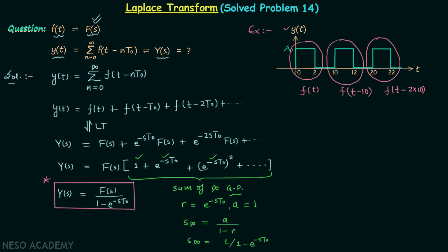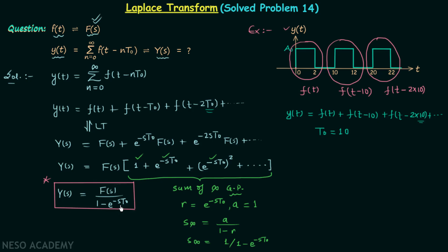It is clear that we can write y(t) equal to the sum of the individual signals, so y(t) equals f(t) plus f(t minus 10) plus f(t minus 2·10) and so on. Comparing this with the general formula, we find t₀ is equal to 10. We have now identified t₀, and looking at the standard result we also need F(s), so we will focus on the time domain signal f(t), meaning we will focus on that particular portion of the waveform.